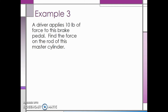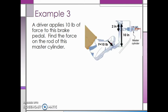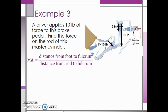In this first example, a driver applies 10 pounds of force to the brake pedal. We want to find the force on the rod of this master cylinder. In the picture, we see the distance from the foot to the fulcrum is 10 inches and the distance from the rod of the master cylinder to the fulcrum is 2 inches. In order to find the force on the rod, we need to find the mechanical advantage of the brake pedal. Mechanical advantage is the distance from the foot to the fulcrum divided by the distance from the rod to the fulcrum. So we take 10 inches and divide by 2 inches, which gives us a mechanical advantage of 5.